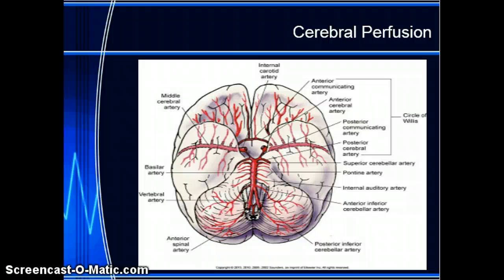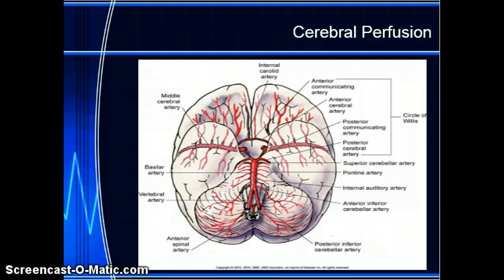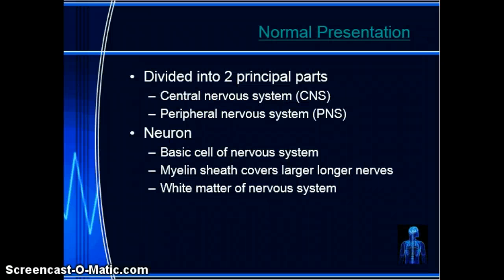When looking at cerebral perfusion, the anterior, middle, and posterior cerebral arteries are joined together by small communicating arteries, forming a circle or ring at the base of the brain known as the Circle of Willis — as you can see on the right side of your screen. With perfusion, we need to ensure adequate perfusion. When someone has increased intracranial pressure, that is obviously going to decrease cerebral perfusion, and that is why we're going to see those level of consciousness changes.